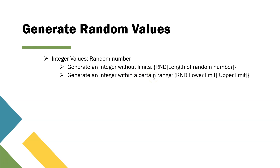The other way is generating an integer within a certain range. If you want to generate a number between 1,000 and 10,000, you define the expression as RND, then the lower limit and the upper limit. Tosca will then generate a random number between this lower limit and upper limit — that is the range within which these numbers will be generated.